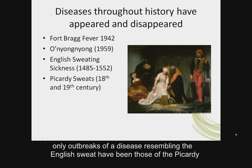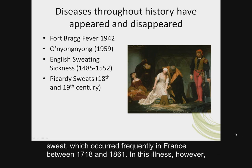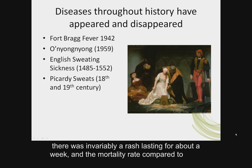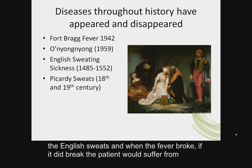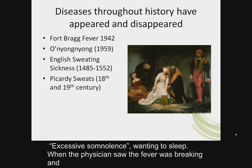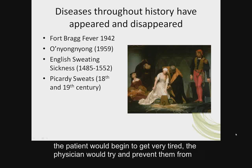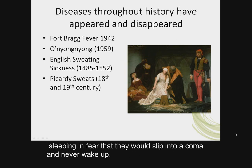Since 1578, the only outbreaks of a disease resembling the English sweats were those of the Picardy sweat, which occurred frequently in France between 1718 and 1861. In this illness there was invariably a rash that lasted about a week, and the mortality rate was much lower compared to the English sweating sickness. When the fever broke, the patient would suffer from excessive somnolence — the physician would try to prevent them from sleeping for fear they would slip into a coma and never wake up.